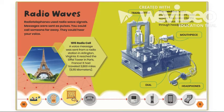Let's look at the machine they used to do this. The machine had a transmitter that sent radio waves. You spoke into the mouthpiece and listened through the headphones. The different parts of this machine are a transmitter, mouthpiece, headphones, and dial.